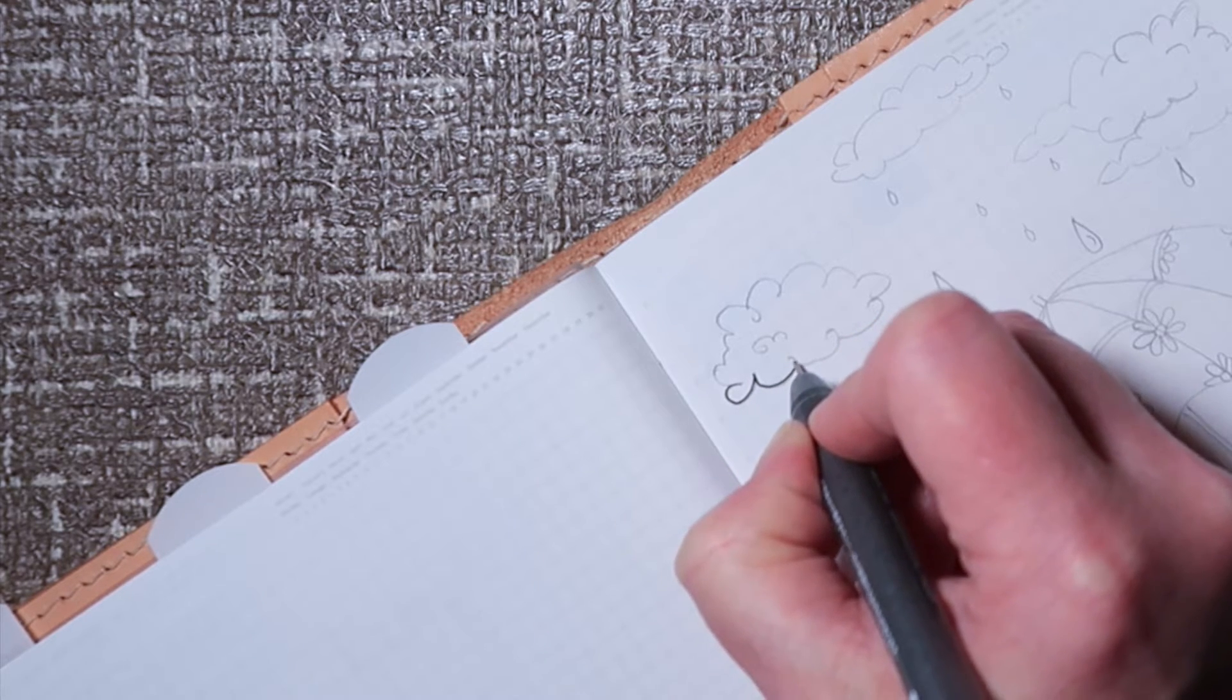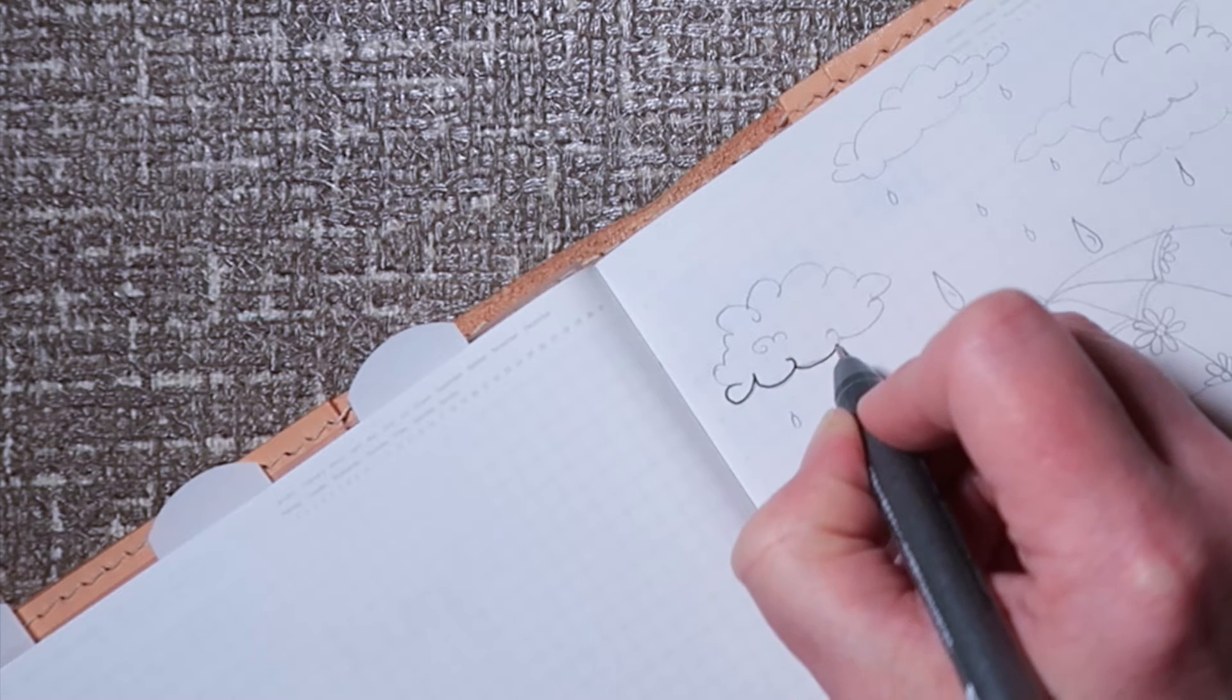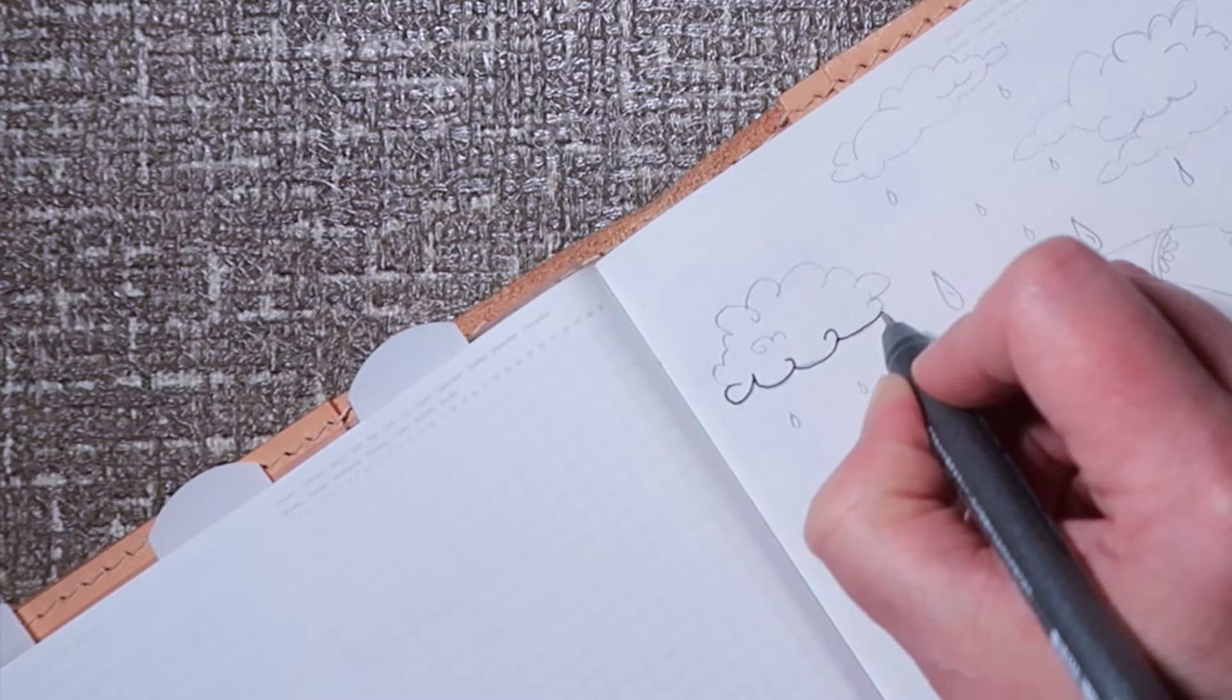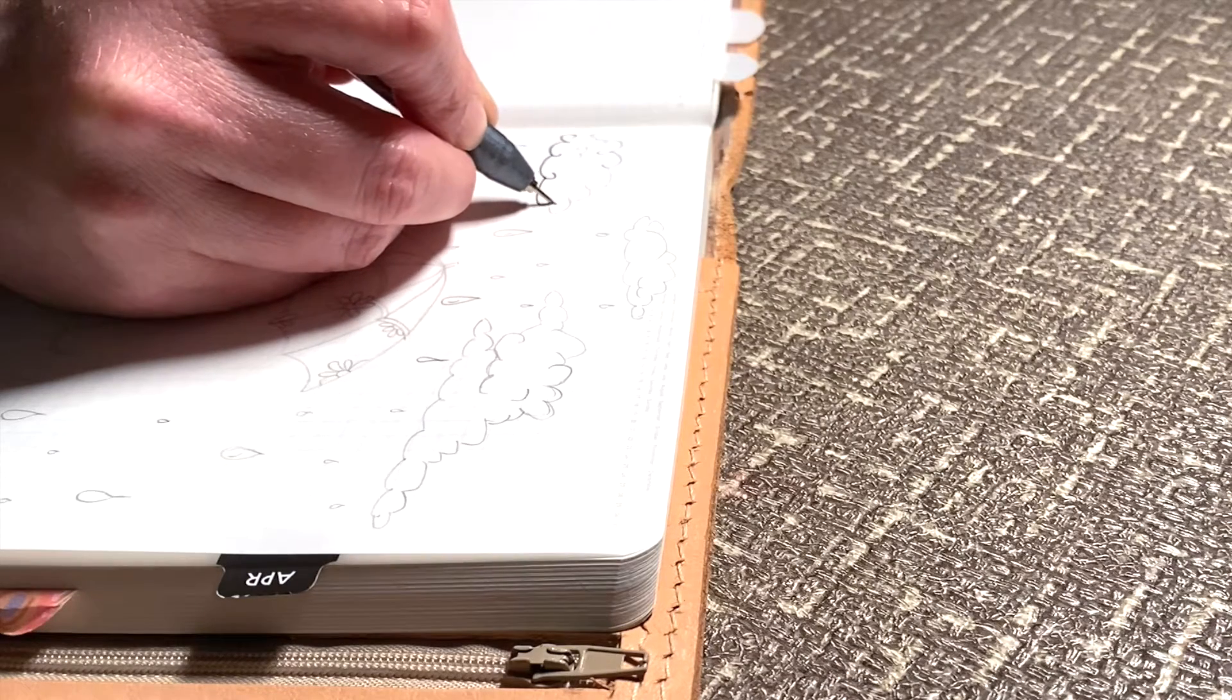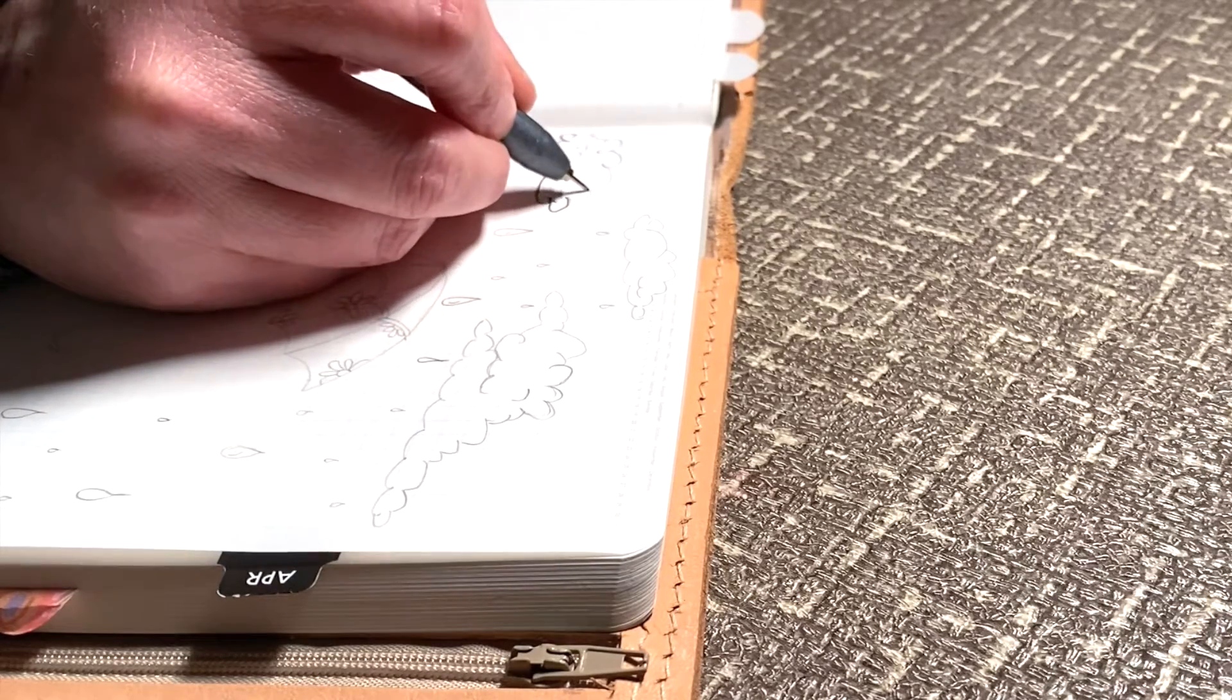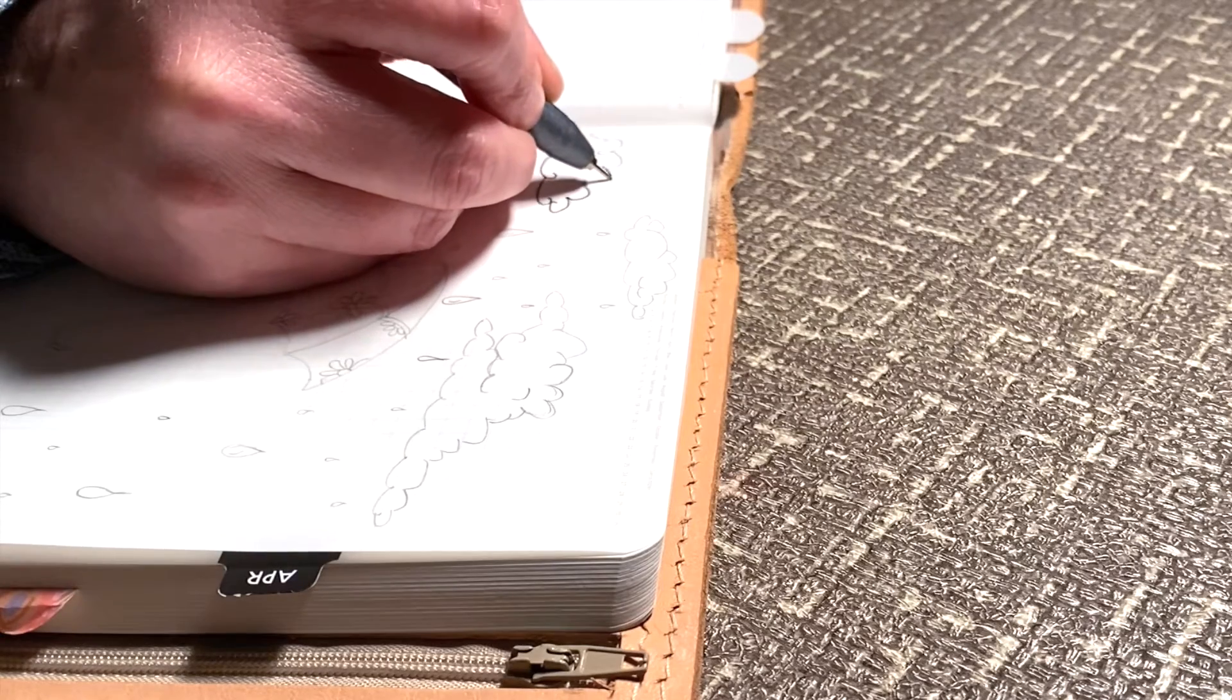As I'm drawing out my April cover page and establishing what my theme is for the month in my bullet journal, I am going to tell a puzzle story, a riddle of sorts. So as you watch me draw out my cover page and listen to this story, try to figure out from whose perspective the story is written.